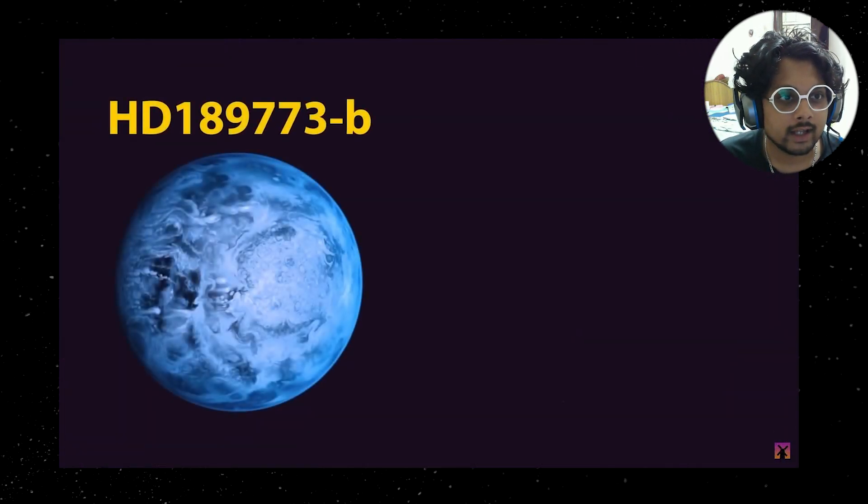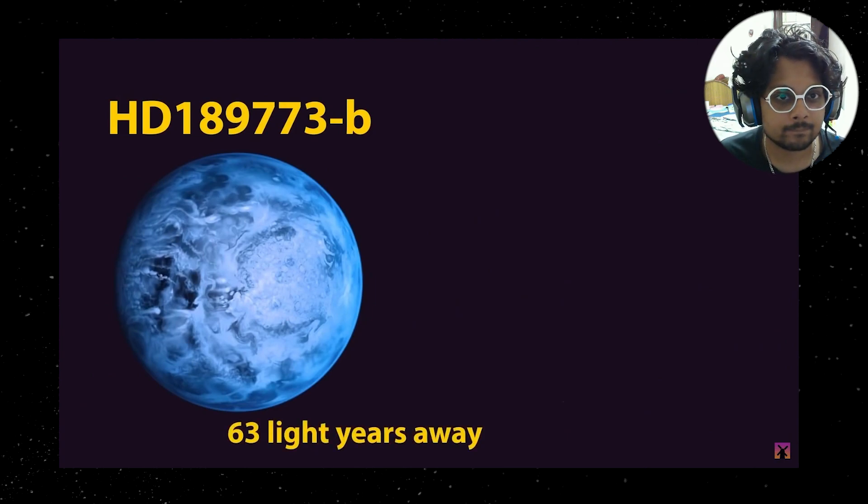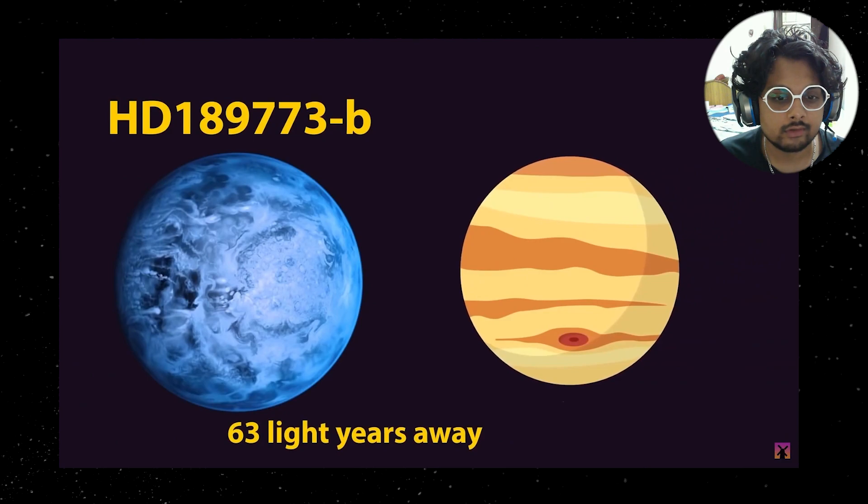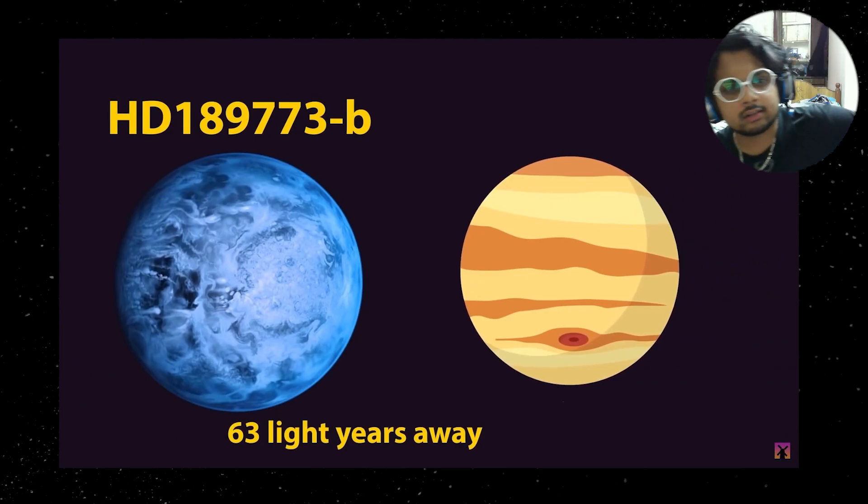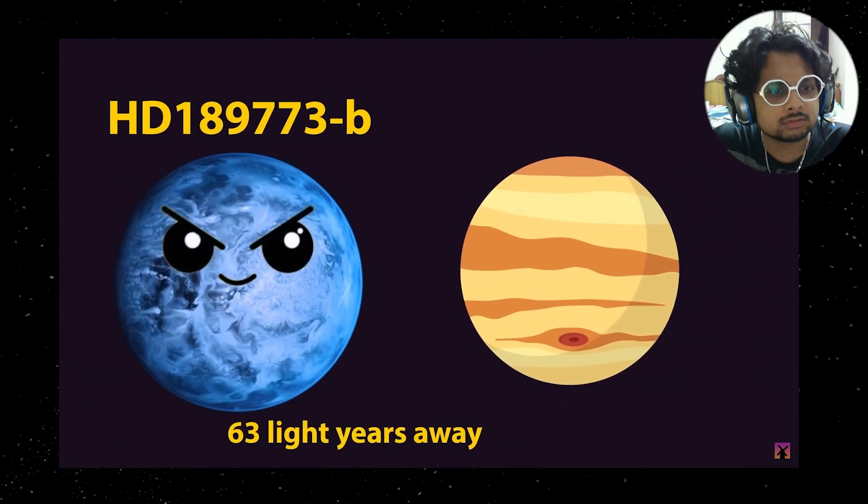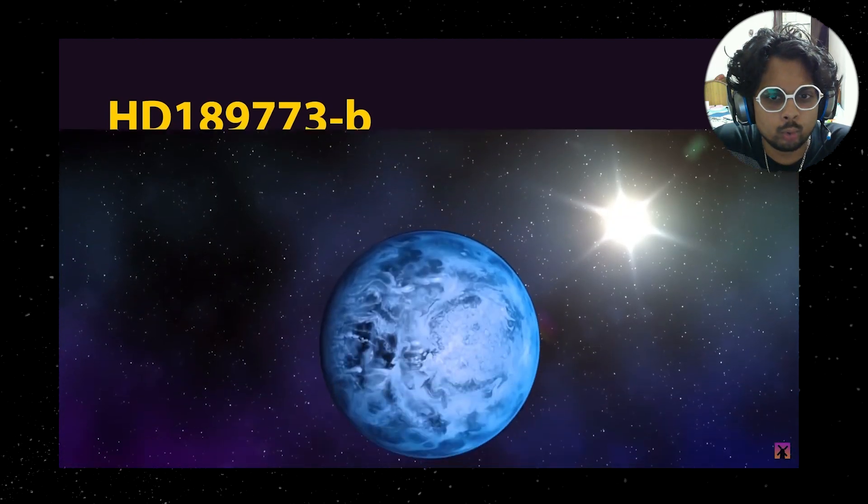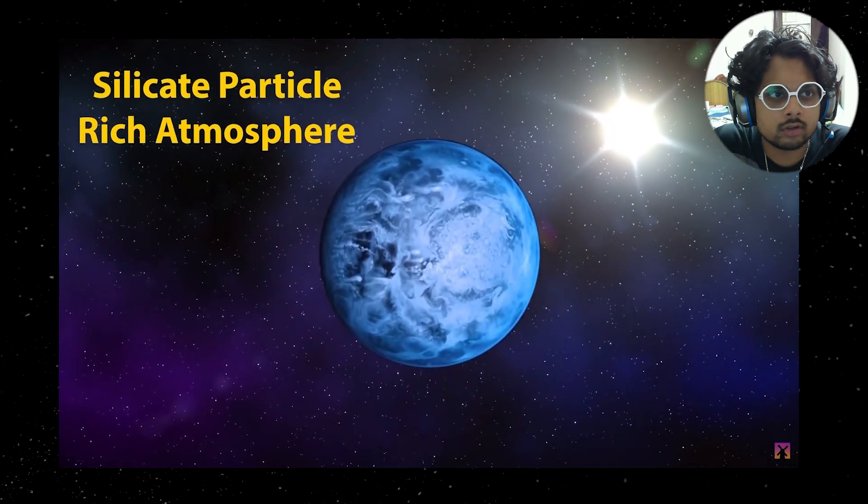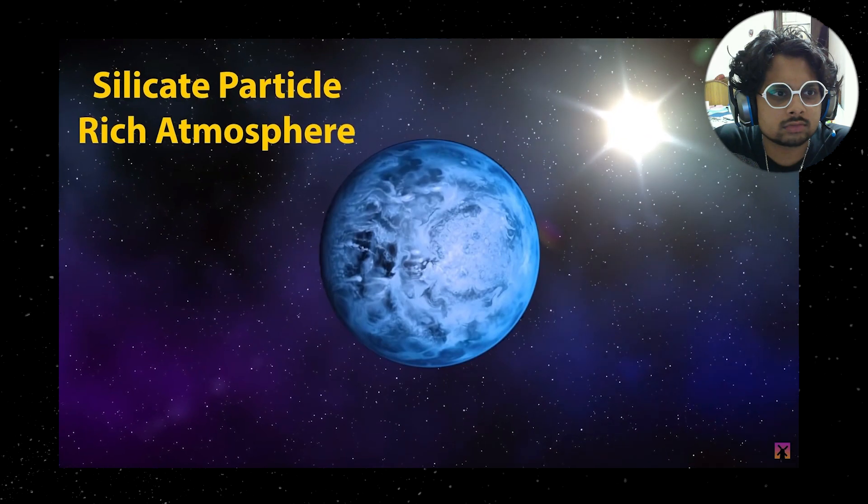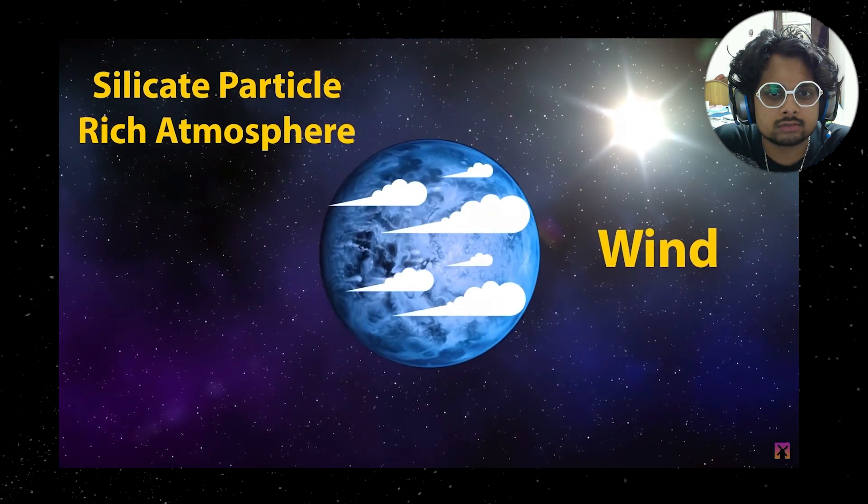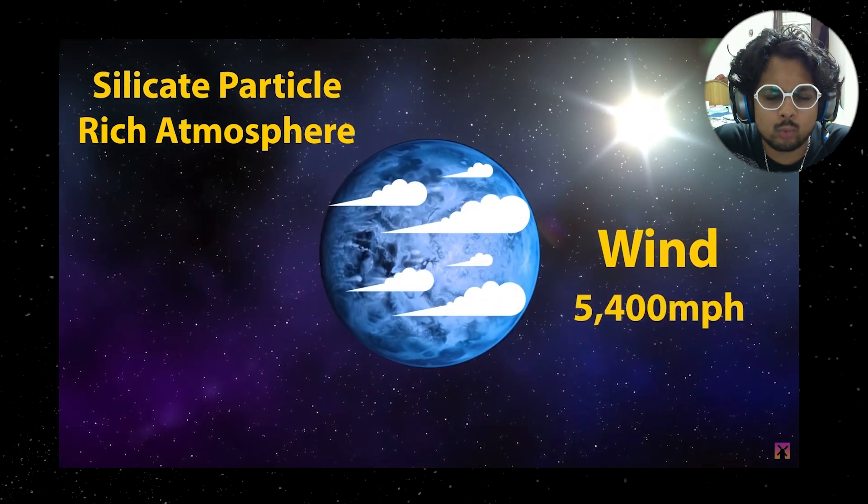Even bizarre planet known as HD 189733B. HD, yeah, is located 63 light years from us, is a little larger than Jupiter and looks stunningly beautiful from space. Okay, beauty is hiding a terrifying secret. It looks this way because the planet's atmosphere is made up primarily of silicate particles.